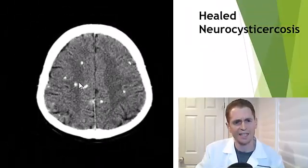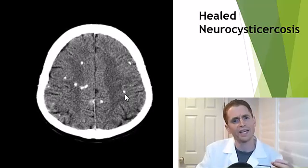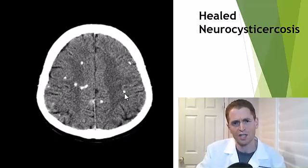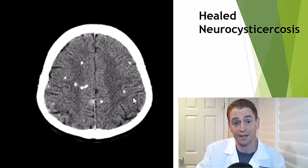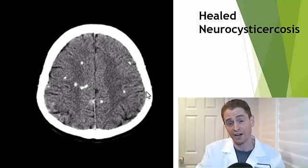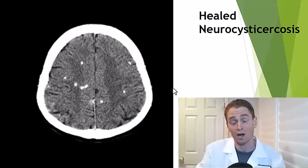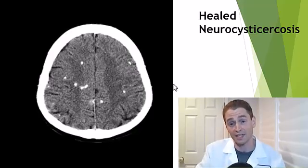CT is also good at looking at calcium. This is a CAT scan of someone with healed neurocysticercosis, a healed parasite infection of the brain. It forms calcified scars as the immune system successfully fights off the parasite. This is rare in the United States but more common in countries such as Mexico, Guatemala, and El Salvador, where pork can be contaminated with this parasite.